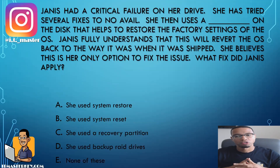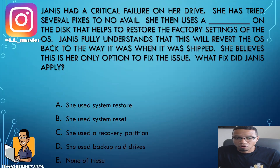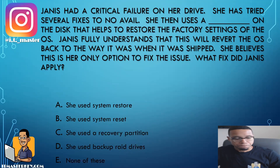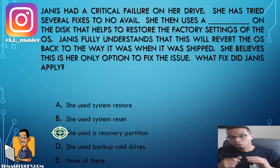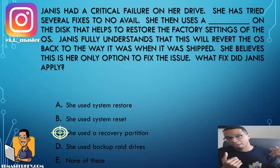Janice had a critical failure on her drive. She is trying several fixes to no avail. She then uses a blank on the disk that helps to restore the factory settings of the OS. Janice fully understands that this will revert the OS back to the way it was when it was shipped, and she believes this is the only option to fix the issue. What fix did Janice apply? She used a recovery partition — a reserved space on the drive that, when booted, resets your entire drive back to the factory state.